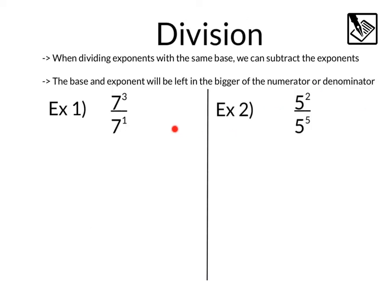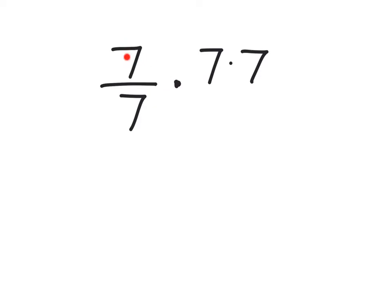Let's further divide these laws of exponents by going over division. When dividing exponents with the same base, we can subtract the exponents. The base and exponent will be left in the bigger of the numerator or the denominator. I want to take a side note here by going over this seven to the third over seven to the first. Here we have seven times seven times seven, seven to the third, divided by seven to the first. All I did here was take one of these sevens and match them up, because we know that anything divided by itself is one.